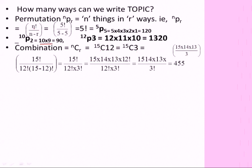This formula is n factorial n divided by n minus R. What is this formula? Factorial n divided by factorial n minus R into n minus R.